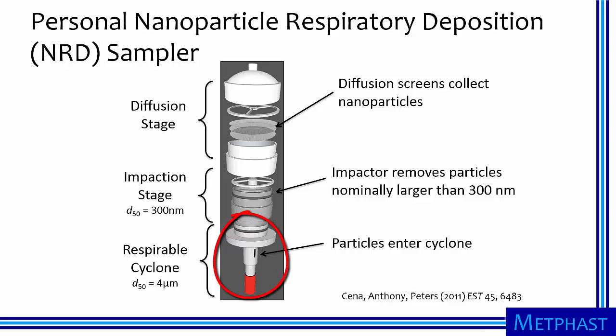In this device, particles enter a respirable cyclone, which removes the largest dust, nominally that larger than 4 micrometers, and may cause downstream components to fail. An impactor then removes particles larger than 300 nanometers, leaving only the smallest particles airborne. Then a series of diffusion screens collect nanoparticles with efficiency that mimics deposition in the human respiratory system. These nanoparticles can then be analyzed separately from other airborne particles.